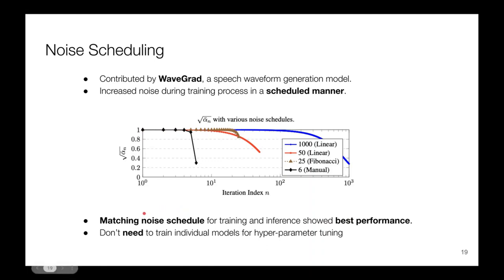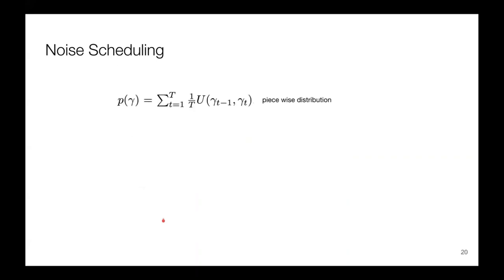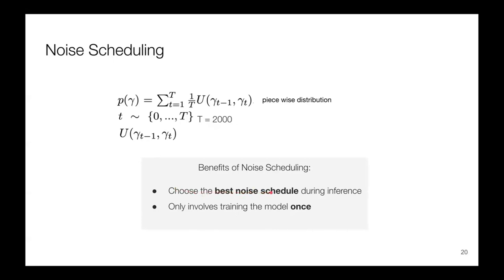Research confirmed that using the same noise schedule from training can also be used for inference, showing the best performance. This means there is no need to train individual models for hyperparameter searches. In SR3, they follow this noise scheduling using piecewise distributions, dividing the training process into several intervals and assigning a noise distribution to each step. The time step T is uniformly sampled — in this paper, T is set to 2000 — and once T is determined, noise is uniformly sampled according to that interval. Because this process is involved in training only once, there is no need to train the model multiple times, making SR3 a cost-effective and efficient solution.